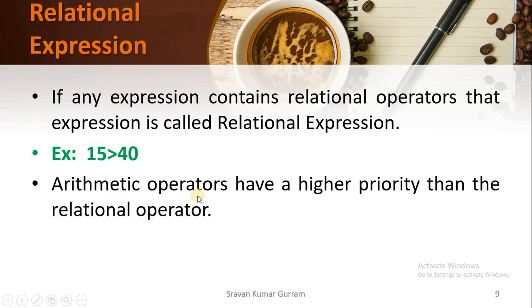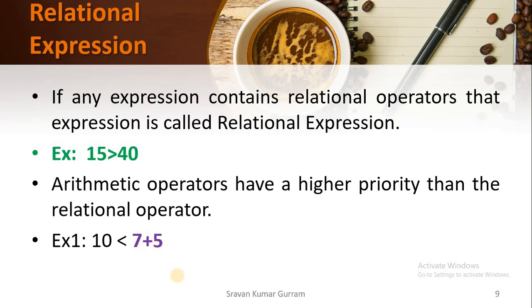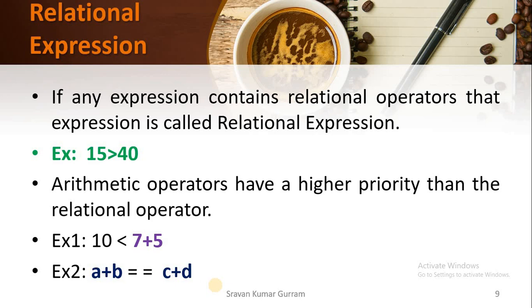This is another important point: arithmetic operators have higher priority than relational operators. For example, in A + B == 10 < 7 + 5, the arithmetic operator + is evaluated first. So 7 + 5 is evaluated before the relational operator. Similarly, in A + B == C + D, the expressions A + B and C + D are evaluated first because arithmetic operators have higher priority, and then the == operator is evaluated with the resulting values.